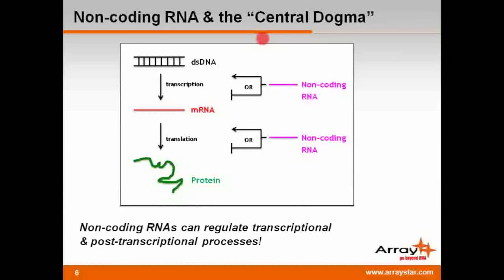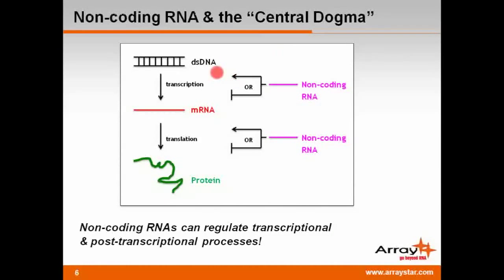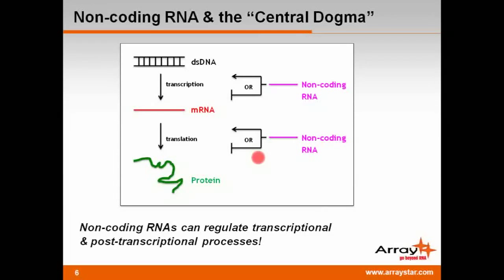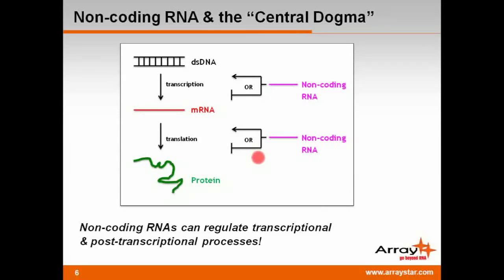Biologists are familiar with the classic central dogma, a term coined about 50 years ago by Francis Crick, in which DNA makes RNA makes protein. However, we now know that non-coding RNAs can activate or repress transcription, and activate or repress translation, playing major roles in the processes of transcription, post-transcriptional modification, and translation. Long non-coding RNAs, dismissed for decades as either pseudogenes or transcriptional noise, are the latest members of this mysterious group of regulatory RNAs to be spotlighted for a role in genetic function.